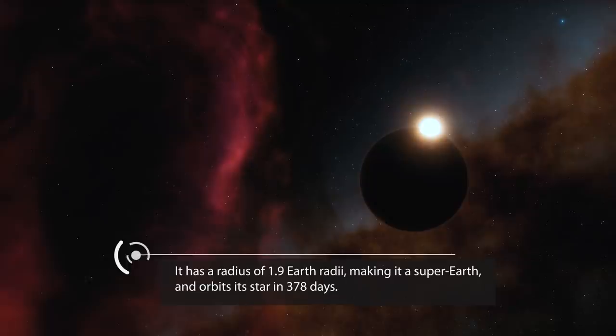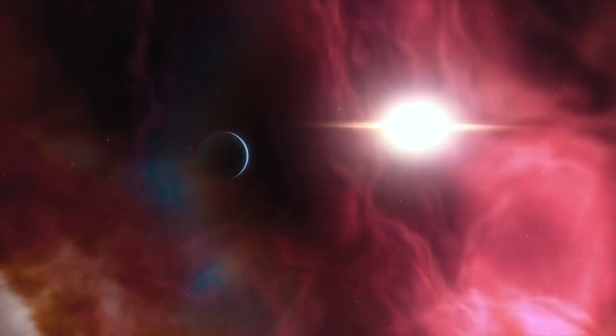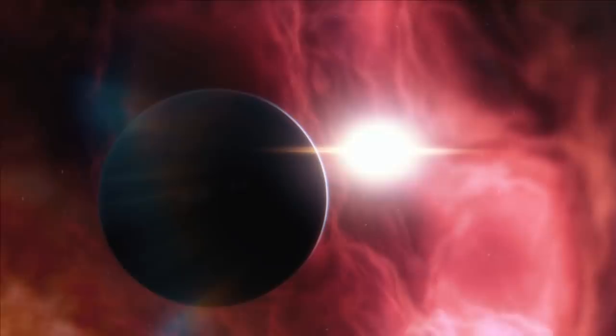Since the star is similar to our Sun, the planet receives a similar amount of energy and radiation as Earth does. This also means that the planet resides in a similar spot in the habitable zone around the star where temperatures could allow liquid water to exist, as Earth does in the habitable zone around our Sun.